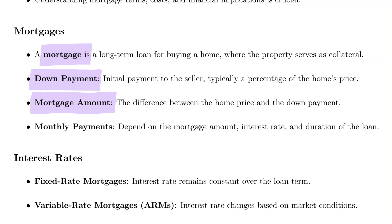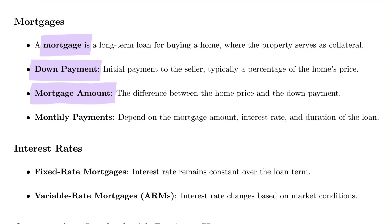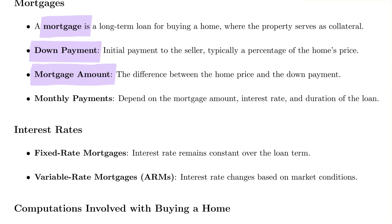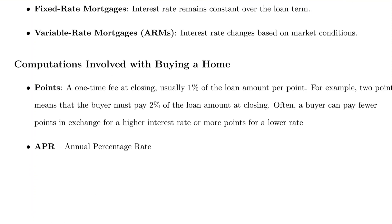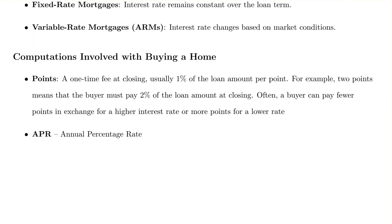The monthly payments depend on the mortgage amount, interest rate, and duration of the loan. When it comes to interest rates, you have fixed rate mortgages where the interest rate remains constant over the loan term, and variable rate mortgages, also known as ARMs, where the interest rate changes based on market conditions. One thing to keep in mind when calculating the mortgage is a term called points.